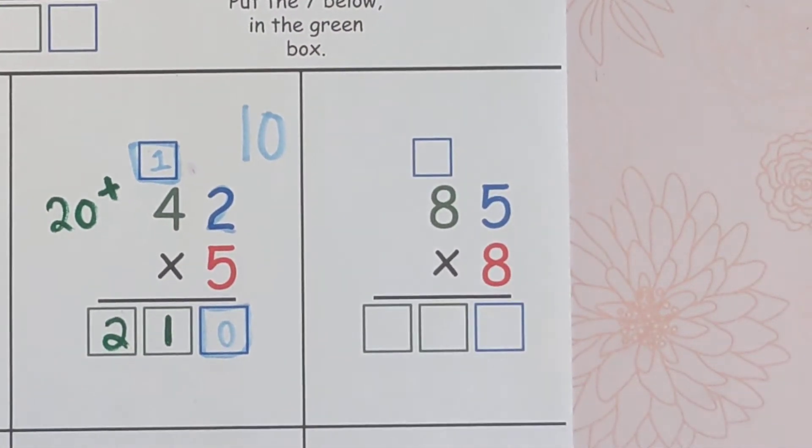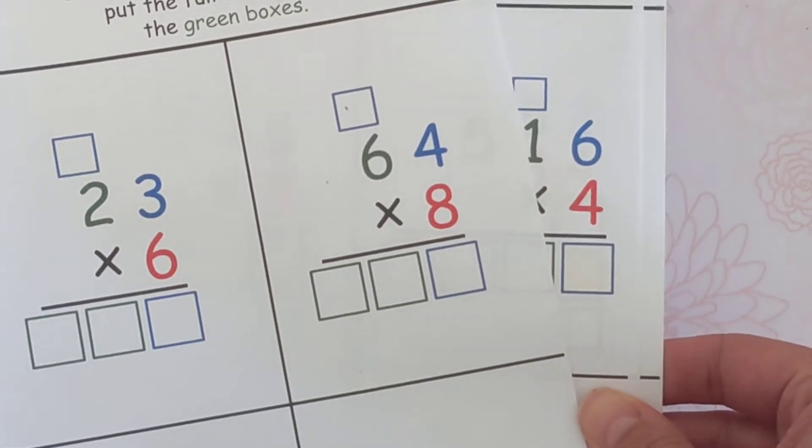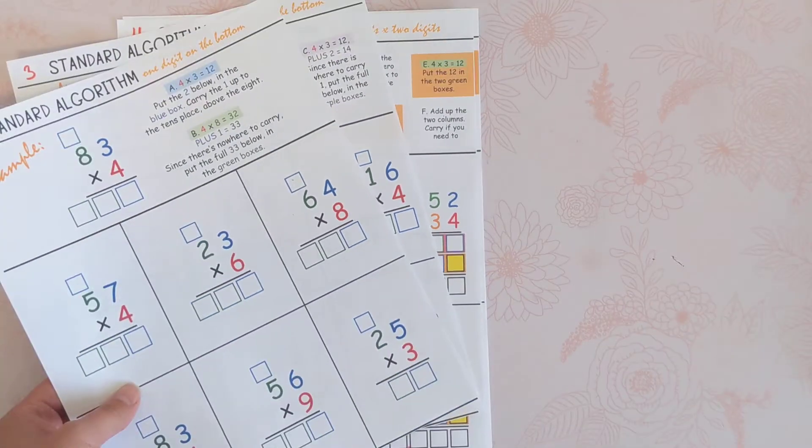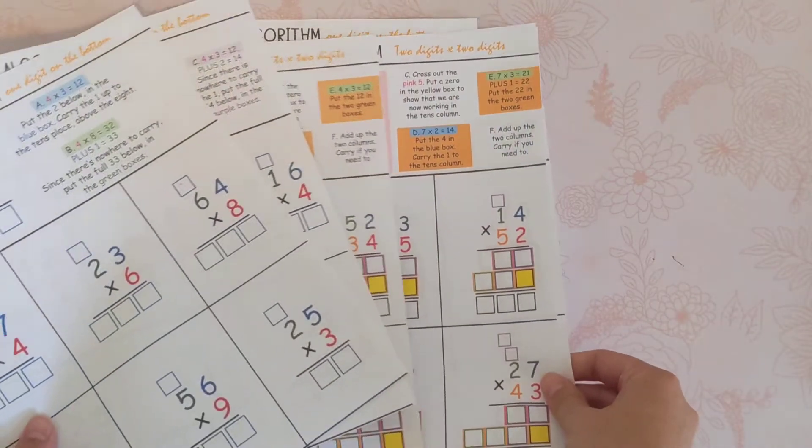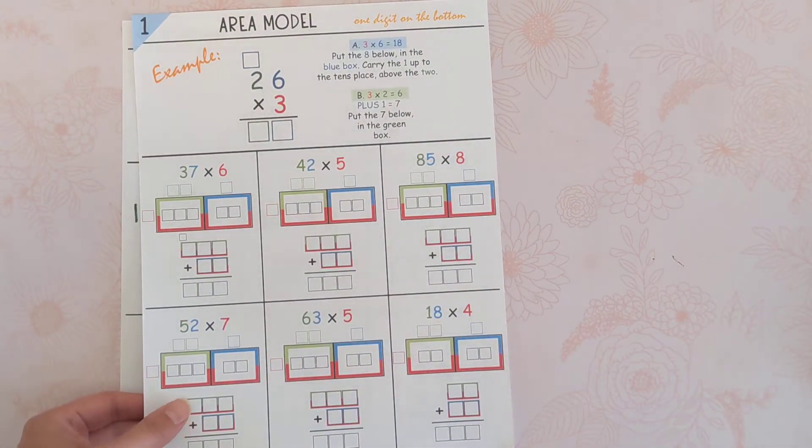Hello, today we are doing the standard algorithm, two digits times one digit. If you're interested in getting the rest of these worksheets, you can click in the description below and you will get 36 questions, task cards, digital copy, videos for every question, and you can also access these in different formats.